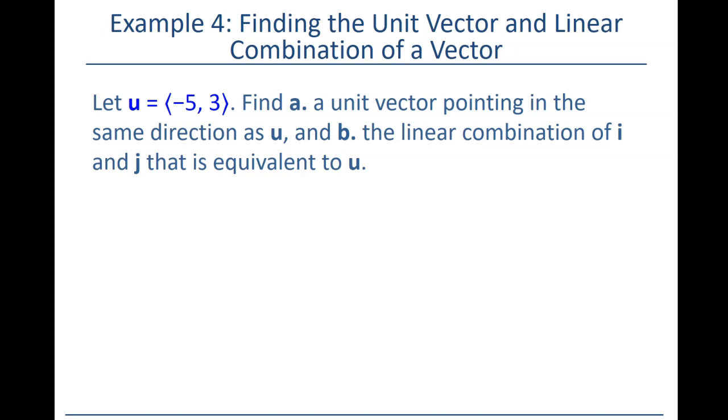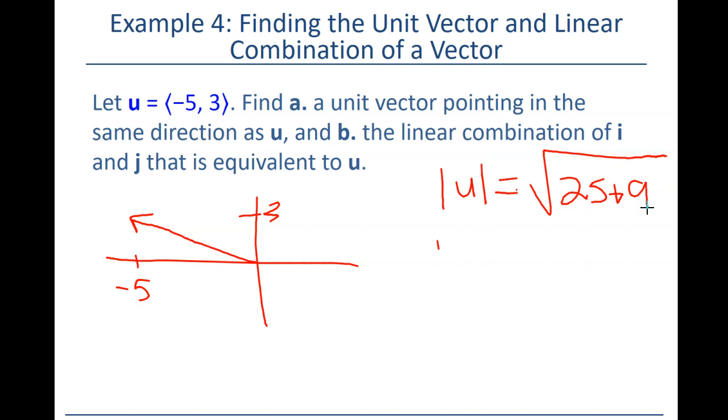Again, remember that means we go five units in the negative x direction. We go three units up in the positive y direction. So there's our vector. And the magnitude currently of this vector is the square root of negative 5 squared, which is 25, plus the 3 squared, which is 9.